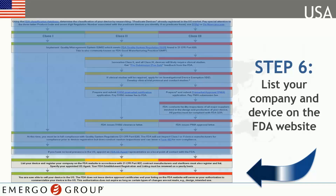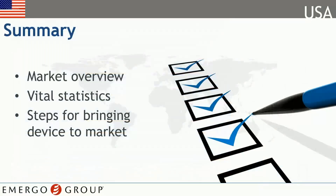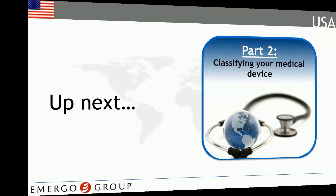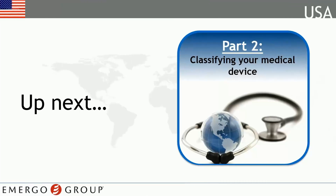We'll cover all of these steps in more detail in subsequent videos. In this introductory module, we covered some of the U.S.'s market statistics, which demonstrate why you would want to sell your products there. We also touched on the governing regulatory body, the FDA, and finally gave you a glimpse at the six steps involved in bringing your device to market. The next section delves a little deeper into the device classification process.